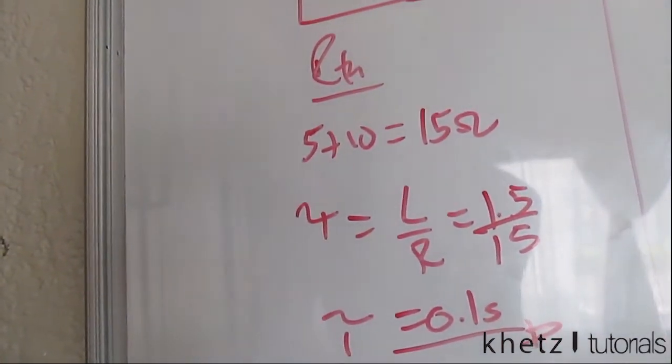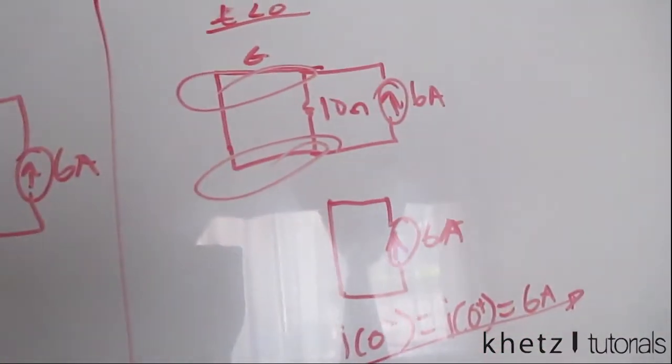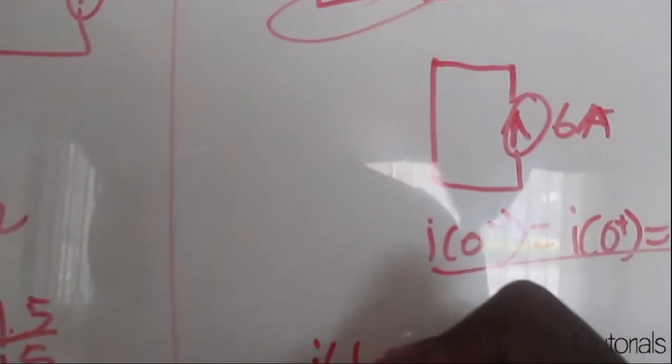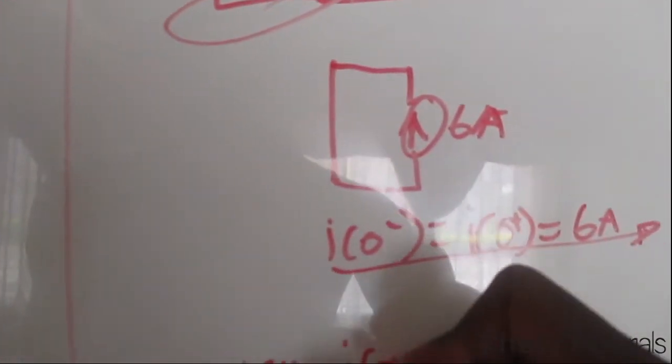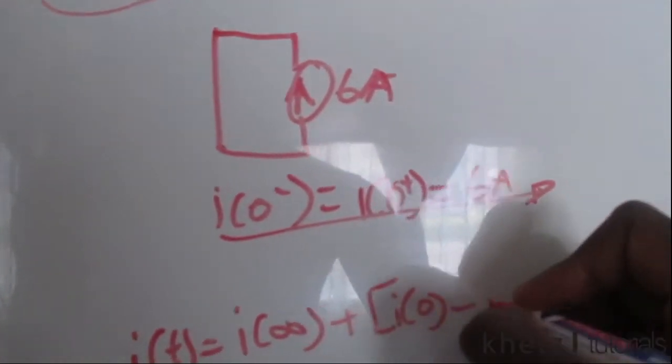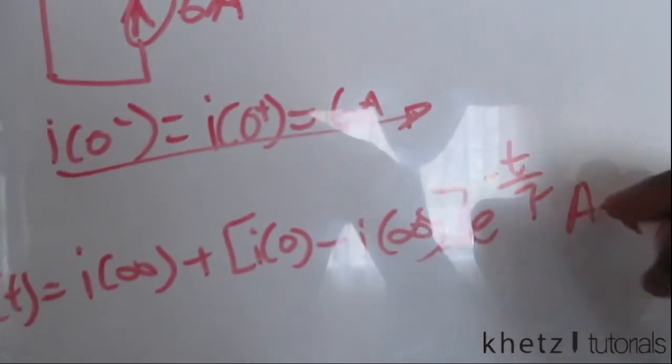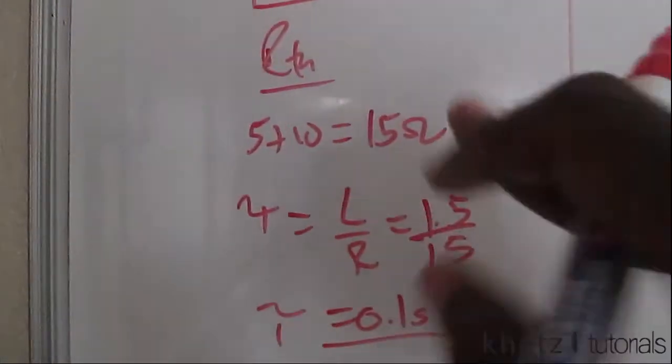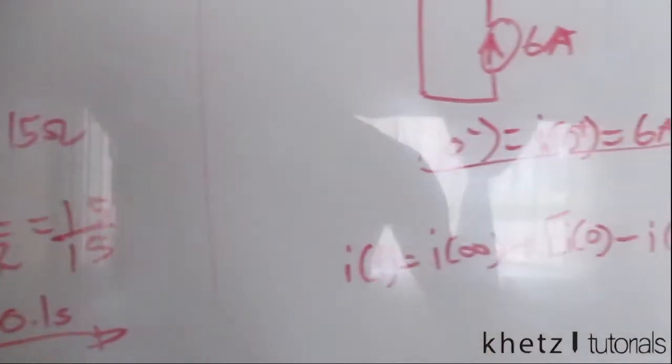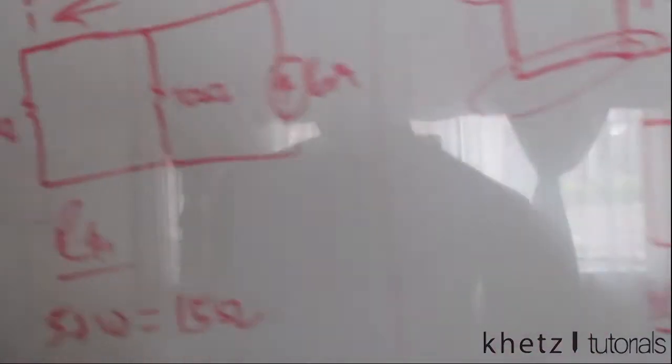We have our Rth and now we can proceed. Just a recap: i(t) equals i(∞) plus [i(0) - i(∞)]e^(-t/τ) in amperes. We found the time constant, we found Rth, and we found the initial condition. What's left is only to find i(∞).